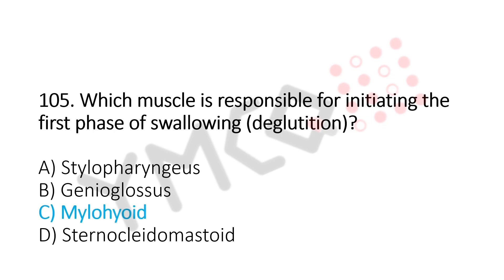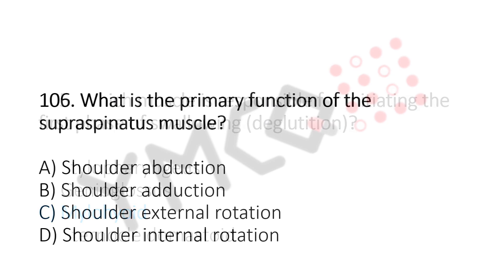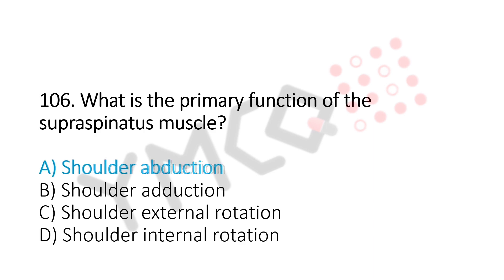Now let's move to question number 106. What is the primary function of the supraspinatus muscle? Option A, shoulder abduction. Option B, shoulder adduction. Option C, shoulder external rotation. Option D, shoulder internal rotation. And the answer is Option A, shoulder abduction.